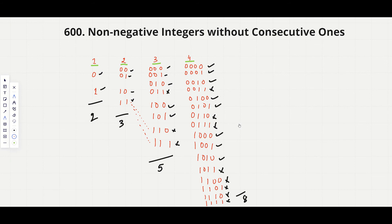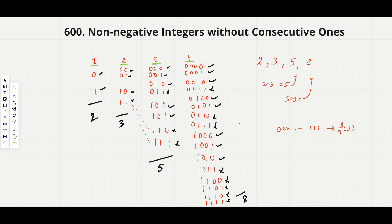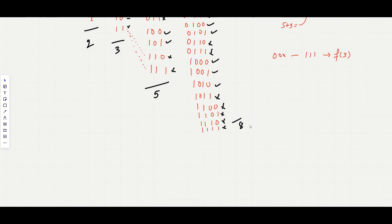Do you see the pattern here? It basically becomes a Fibonacci series. We have 2, then 3, then 5, then 8 — so 2 plus 3 equals 5, and 3 plus 5 equals 8. So the total count of numbers with non-consecutive ones in a range of n bits is F(n+1), which is why for 3-bit numbers F(3) gives 5.